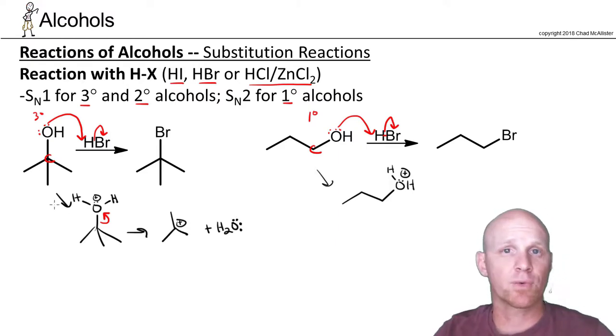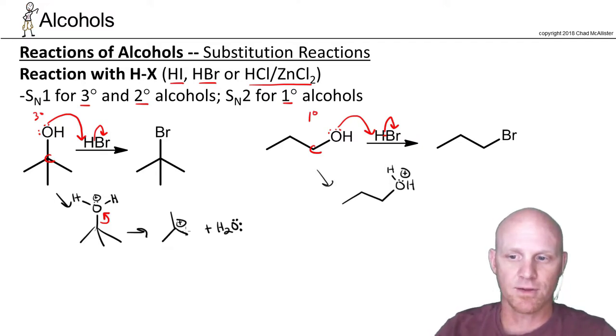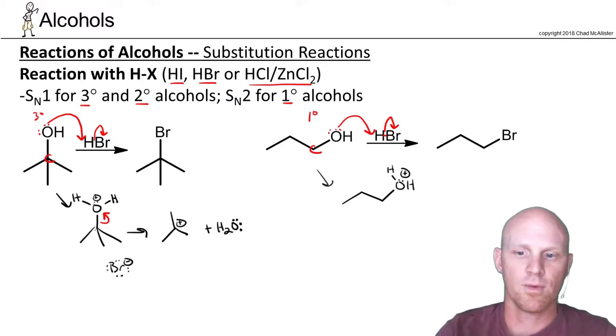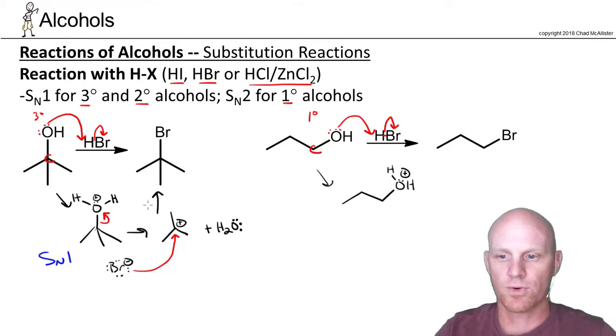So in this case, that carbocation is free to rearrange if there's a favorable one. There isn't in this case. It's as stable as it's going to become. In this case, notice when we deprotonated the HBr, we also formed a bromide ion back here. And that bromide is now going to attack the carbocation to give us our final product. So that's the mechanism here. And this is indeed SN1, going through a carbocation intermediate.